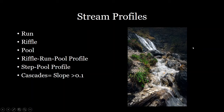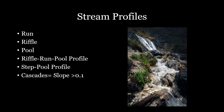Lastly we have cascades. Cascades form whenever you have a slope over a 10% grade, such as this one here that has an even steeper slope. And pretty much all of that pattern gets thrown out the window — instead you just have water flowing over rocks on this steep slope.